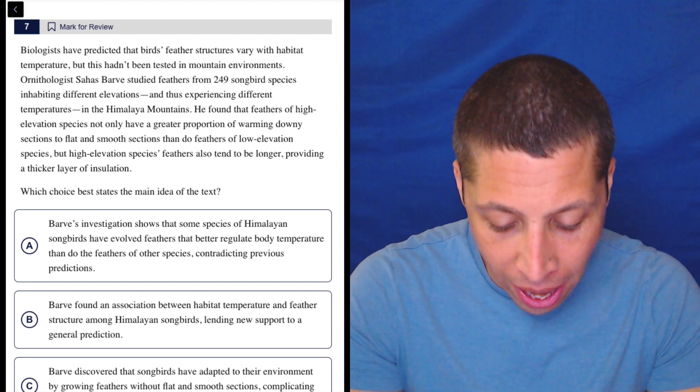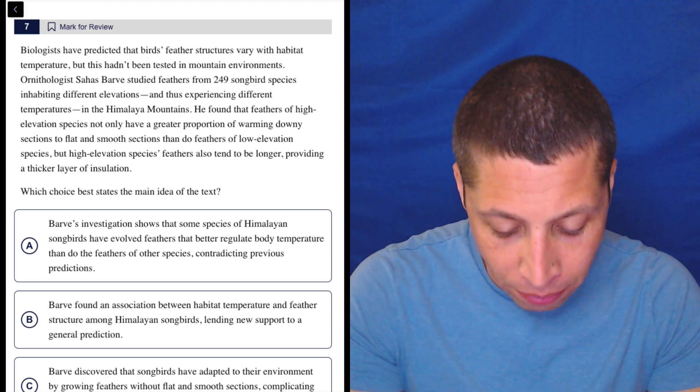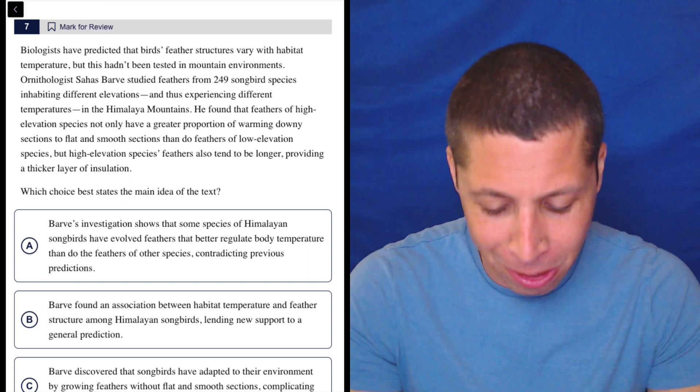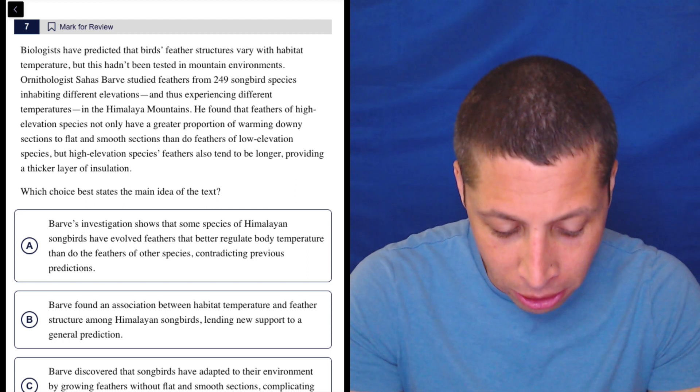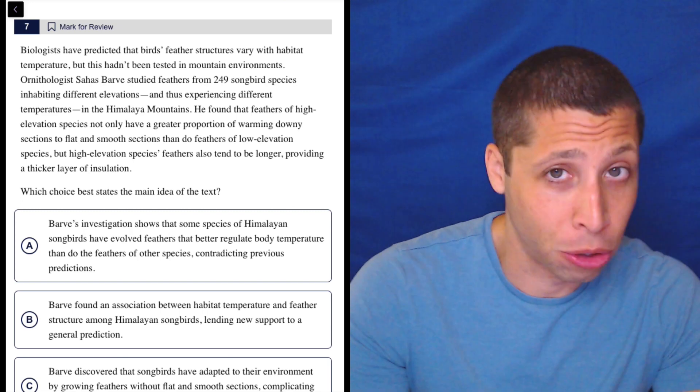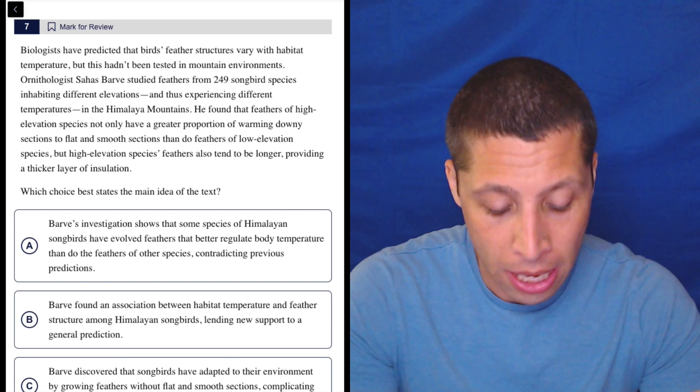He found that feathers of high elevation species not only have a greater proportion of warming downy sections to flat and smooth sections than do feathers of low elevation species, but high elevation species feathers also tend to be longer, providing a thicker layer of insulation. So look, I may have to interpret this and be like, which one is which?